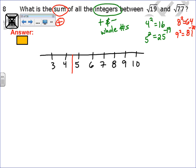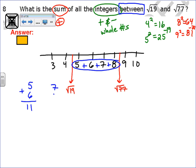So √19 is between 4 and 5, and √77 is between 8 and 9. The question said, what is the sum of all the integers between? Well, between would be 5 plus 6 plus 7 plus 8. Those are the ones that are between. 5 plus 6 gives you 11. 7 plus 8 gives you 15. 11 plus 15 gives you 26, which is the correct answer.